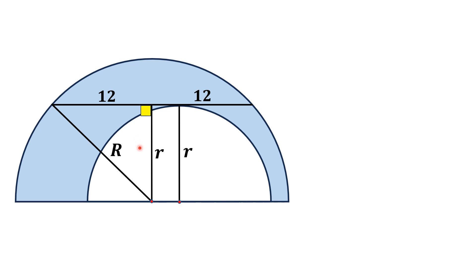Using the Pythagorean theorem on this right triangle, we have R² = r² + 12². Taking r² to the left, we get R² - r² = 12² = 144.